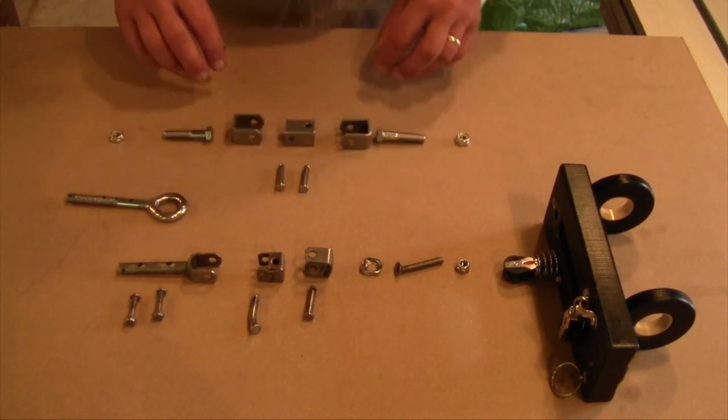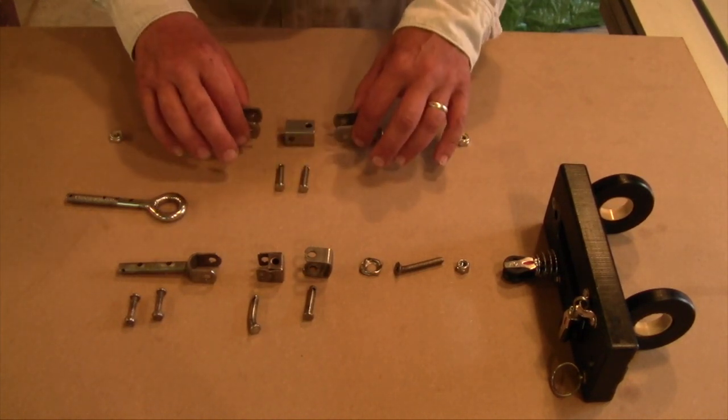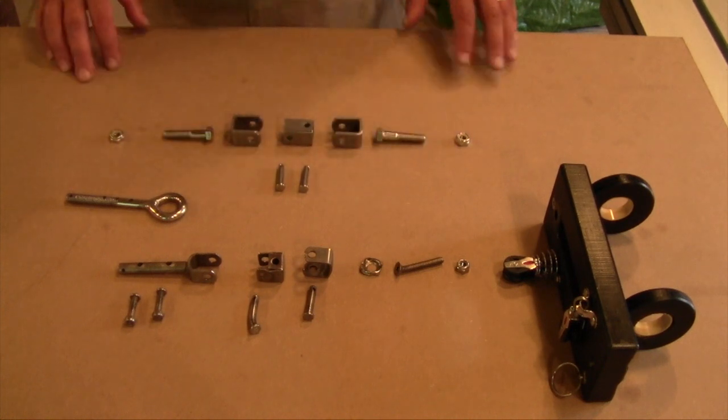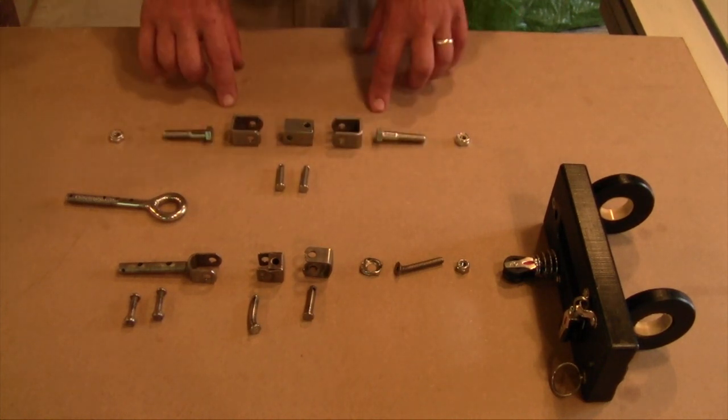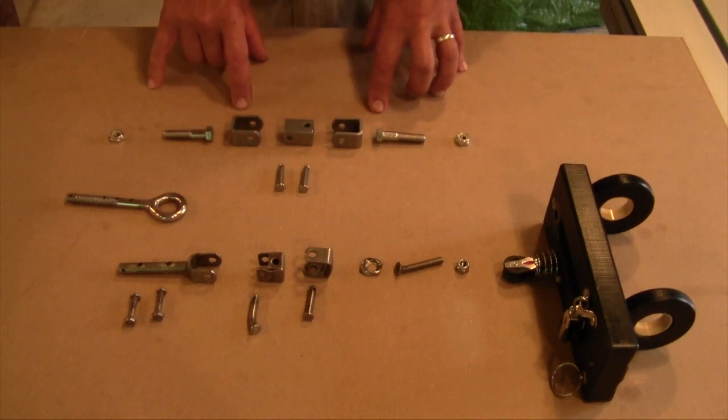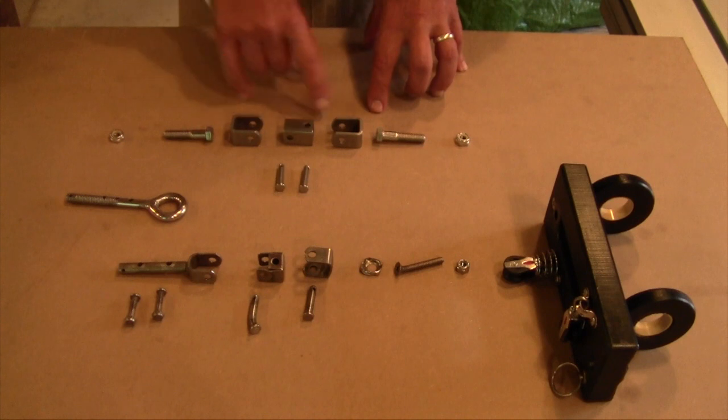But not being completely satisfied with that, I did continue to search and did eventually find these heavier duty gooseneck pieces on the Dwyer site. And the location is not obvious, or it wasn't obvious to me, so I'll do a little segment towards the end of this video to show you how to find these items.